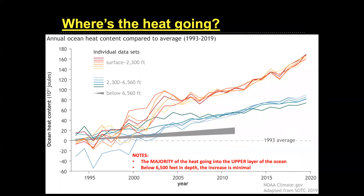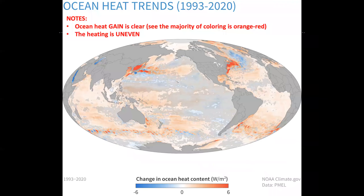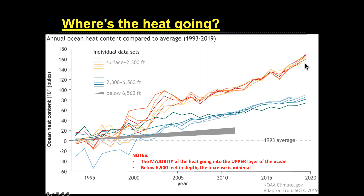Another way to look at the heat distribution: the majority is at the surface down to about 2,300 feet, shown in orange, yellow, and red. Less heat is going to the deeper areas — 2,300 feet and deeper. This is significant because if a hurricane is about to form, it has more energy near the surface, which is exactly where a hurricane gets its energy from to get going.